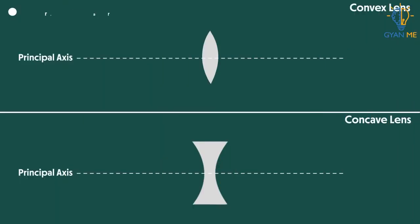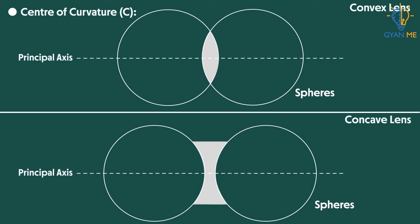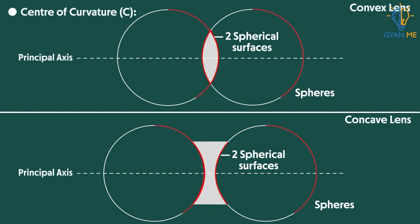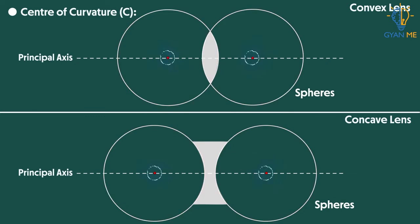So now let's move on to the next term which is center of curvature C. We know that spherical lenses are made from spheres. And as we know, a lens has two spherical surfaces. So these two spherical surfaces form a part of sphere. And the center of these spheres is known as center of curvature. It is denoted as capital C.